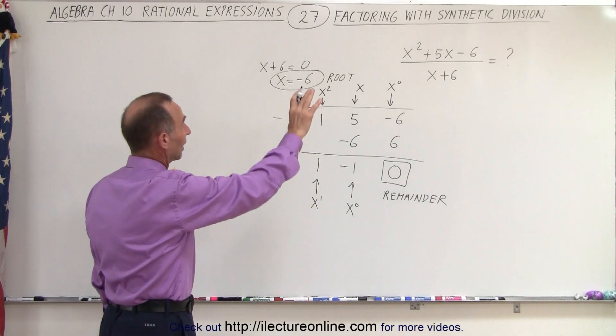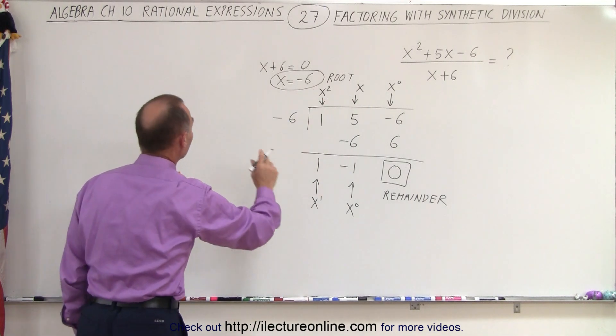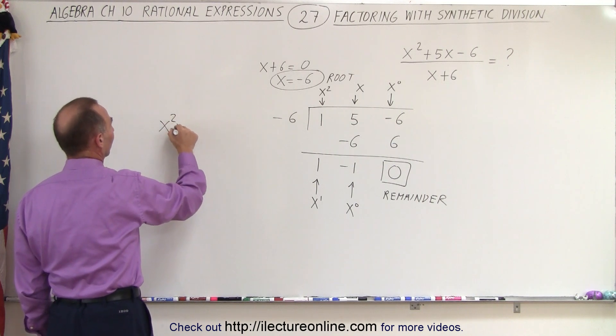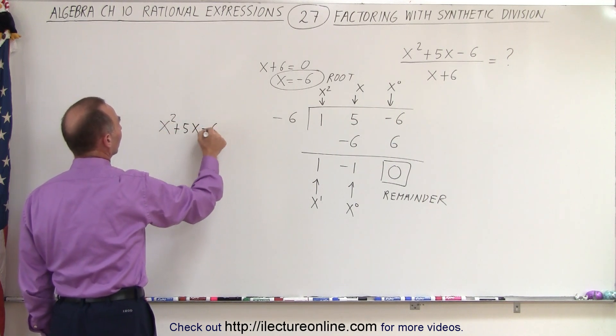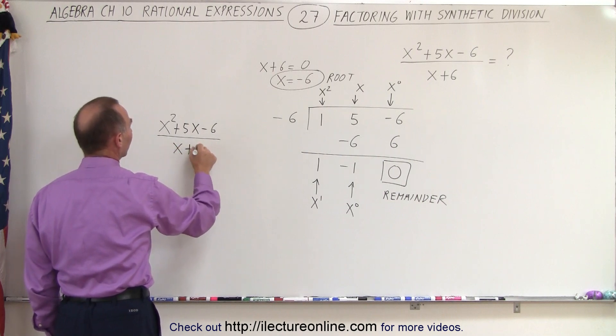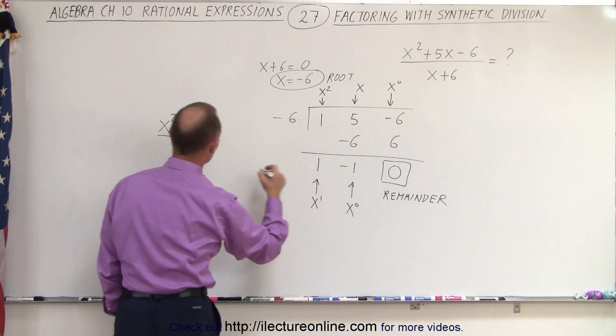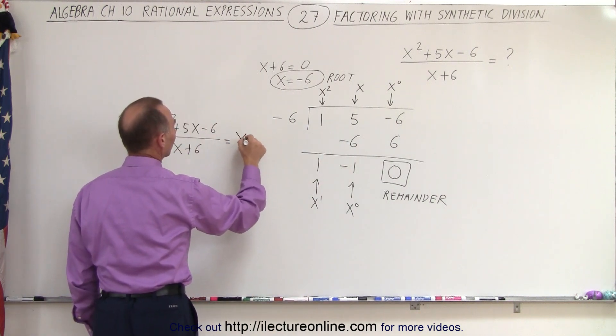Now what we're going to do is interpret what all this means. We can now say that x squared plus 5x minus 6 divided by x plus 6 is equal to 1 times x minus 1. So this is equal to x minus 1.